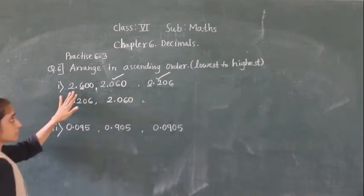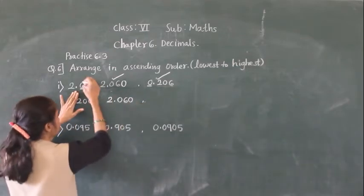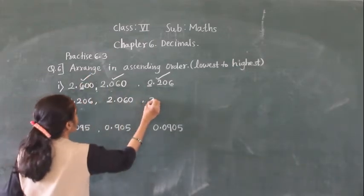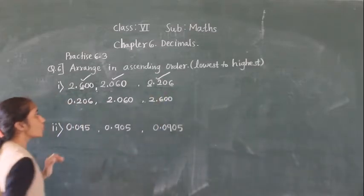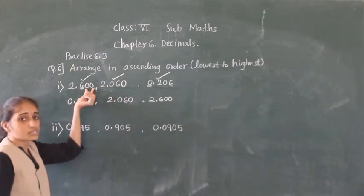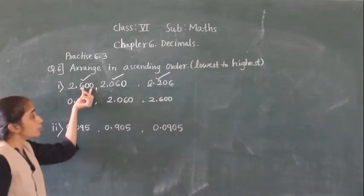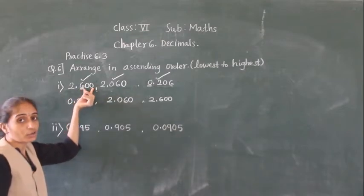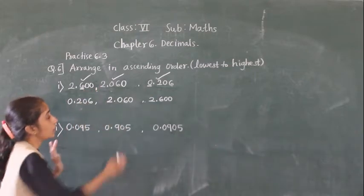The last remaining number is 2.600, so we write that at the end. We include the trailing zeros to make it easy to compare — having equal digits after the decimal point makes comparison easier.